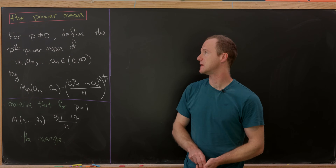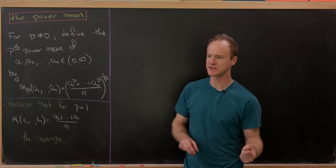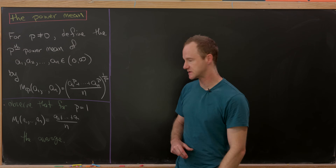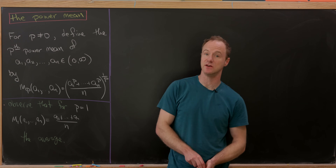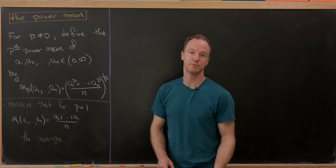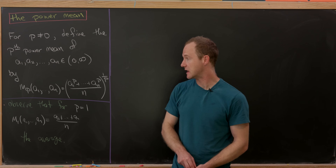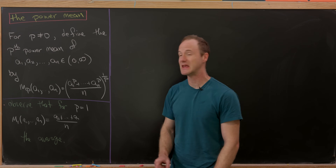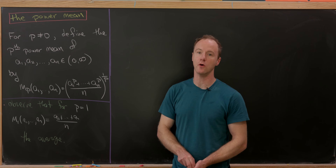Today I want to look at a generalization of the mean known as the power mean. What's really good about this is it allows us to prove a huge family of mean inequalities all at once. So let's look at our definition. As long as p is non-zero, we can define the p-th power mean of positive real numbers a₁ through aₙ by m_p(a₁,...,aₙ) = ((a₁^p + ... + aₙ^p)/n)^(1/p).